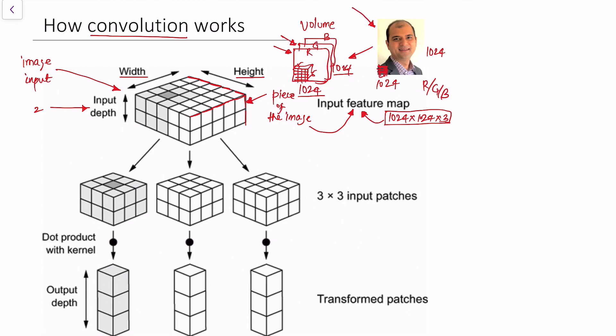With this input volume, considering height and width (not depth), we can break it down into 3 by 3 pieces. For example, one 3 by 3 piece including the entire depth is one patch. The next 3 by 3 piece is the second patch, and moving one more step gives the third patch. In this way the input breaks into many pieces — looking at just three pieces on one side, we can number them 1, 2, and 3.